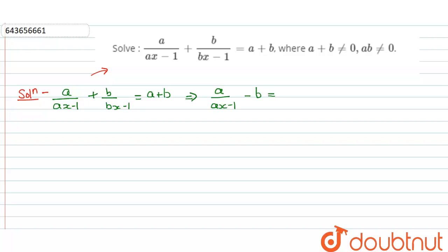Take minus b here. It will be a minus b over ax minus 1. All right, so